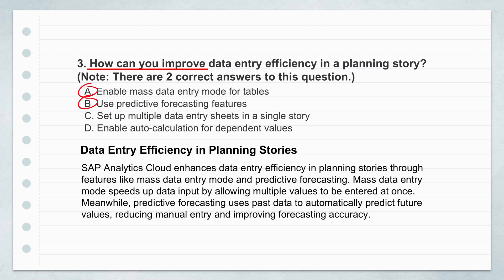The second correct answer is B, use predictive forecasting features. It almost sounds like it's doing the work for you — and it kind of is. Predictive forecasting uses algorithms to look at your past data and spot patterns and trends, then suggests what the future values might be. It doesn't completely replace human input — you still need to double-check and adjust — but it takes away a lot of the manual guesswork. The system gives you smart, data-backed suggestions, making your forecasts more accurate and saving time. So you save time and potentially get better planning results.